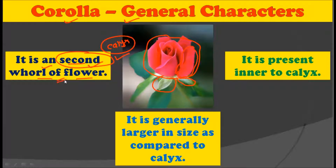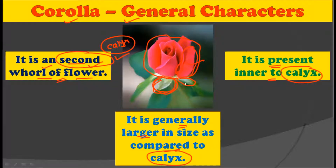The corolla is the second whorl of a flower. Generally, it is larger in size compared to the calyx. In most cases, the corolla is larger in size than the calyx, and it is present inner to the calyx. The calyx is the very outermost part of a flower, while inner to it is the corolla.